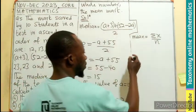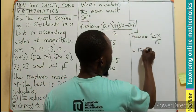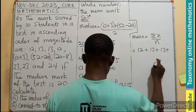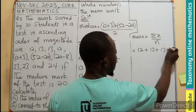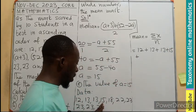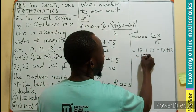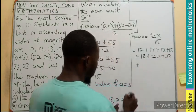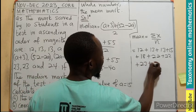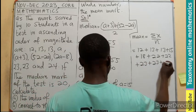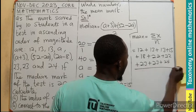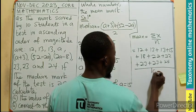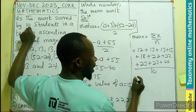12 plus 13, plus 13, plus 13, plus 15, plus 18, plus 22 plus 22, plus 23, plus 23 plus 24. All these will be divided by the number of entries. And there are 10 of them we have been given. And if you count, you get 10.